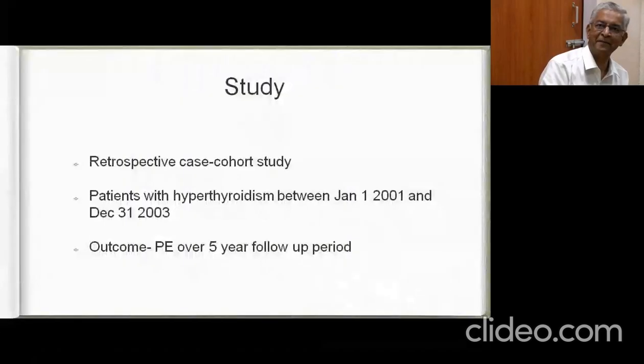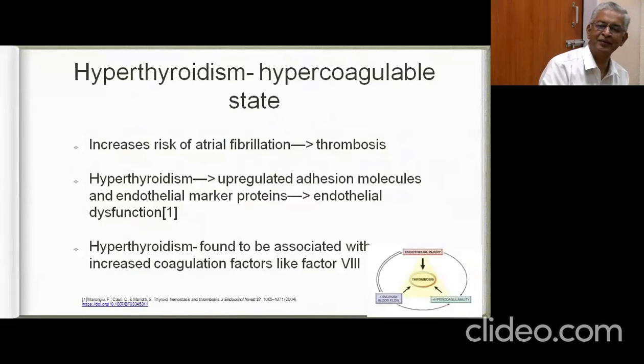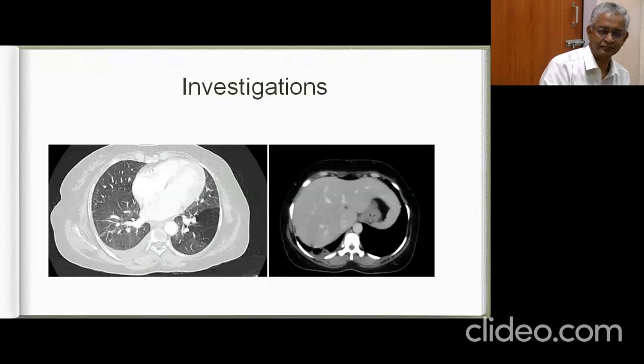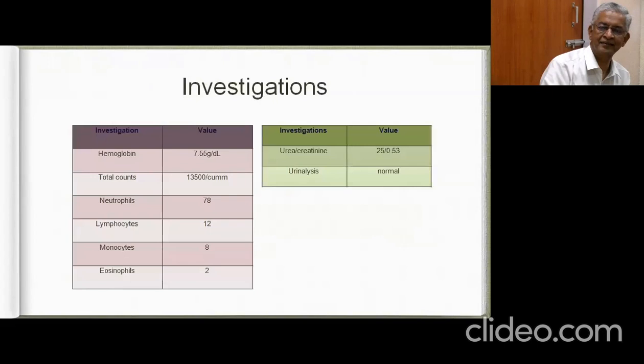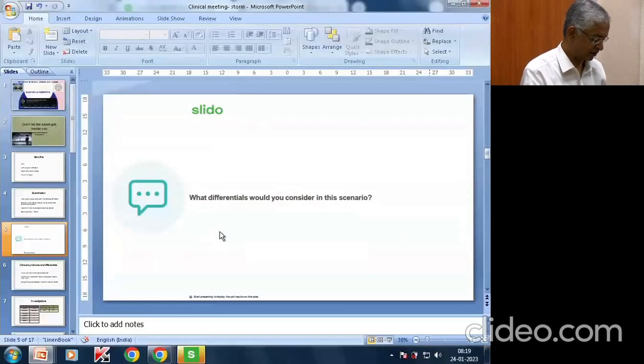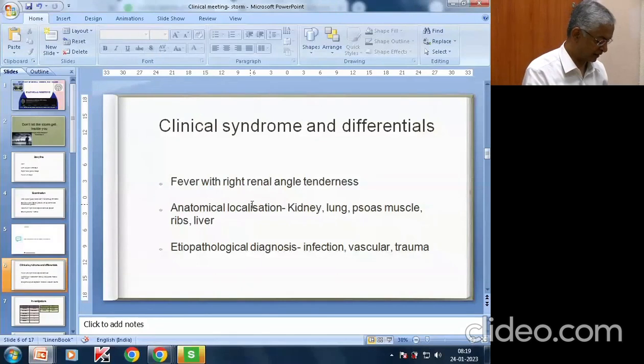Further questions were raised about anatomical localization — from musculoskeletal, ribs, to liver, kidney, lung, and muscle. The session concluded with thanks to the presenter, and the next case was announced: Dr. Lakshmi from Medicine 1 presenting on 'Disseminated Melioidosis Presenting as Septic Arthritis.'